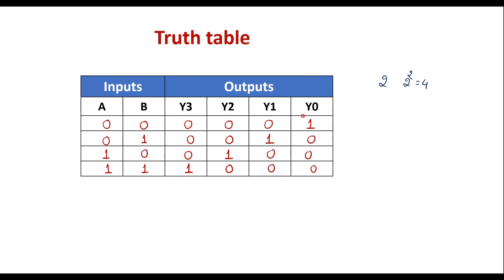Now we will write Boolean equations, also called output equations, for the decoder. To write the Boolean expression we concentrate on the output variables. For output Y0: Y0 is high when A is 0 and B is 0. Wherever a variable is 0 we take its complement, so Y0 equals A-bar B-bar.